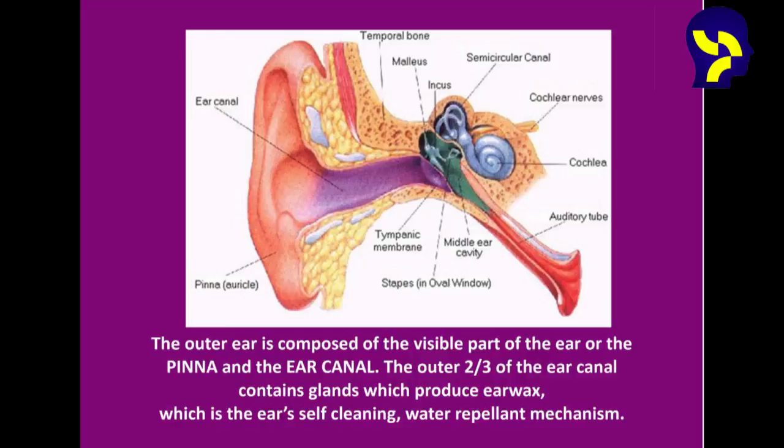The outer ear is composed of the pinna or the external ear, which is visible, and the ear canal which is connected to the eardrum. The outer two-thirds of the ear canal has glands which produce earwax. The earwax is the ear's self-cleaning mechanism.